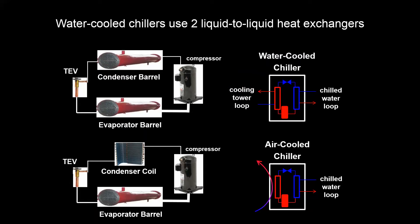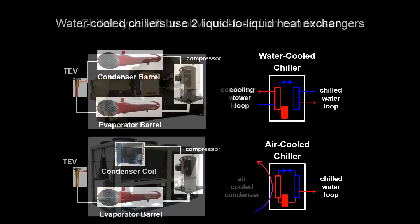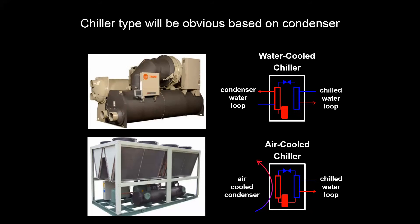With a water-cooled chiller, we're really just going from a condenser coil and evaporator barrel to two barrels. On the condenser side, you have a condenser loop that's running out to a cooling tower or a series of cooling towers. The chiller itself is going to be pretty easy to spot if this is the case — a water-cooled chiller should be inside, and you're going to see these two barrels. Whereas with an air-cooled chiller, you're going to have condenser fans and condenser coils, and it will be outside.